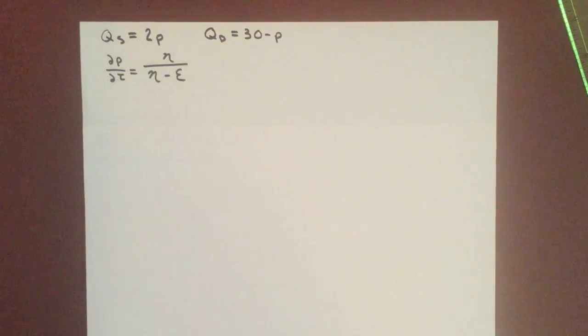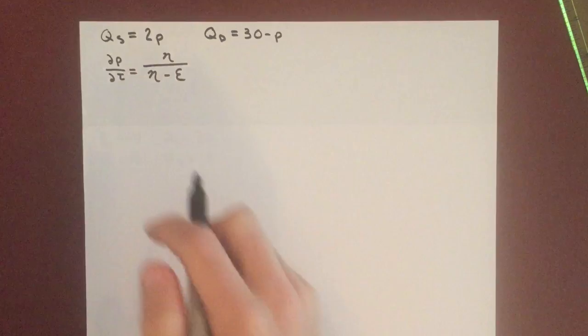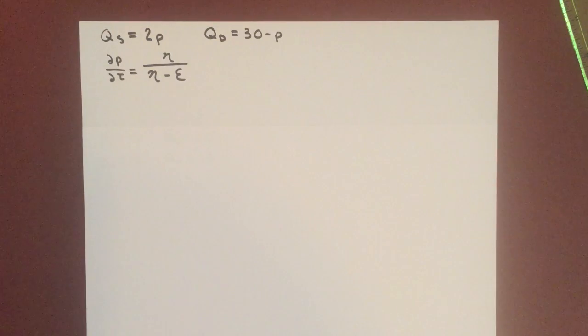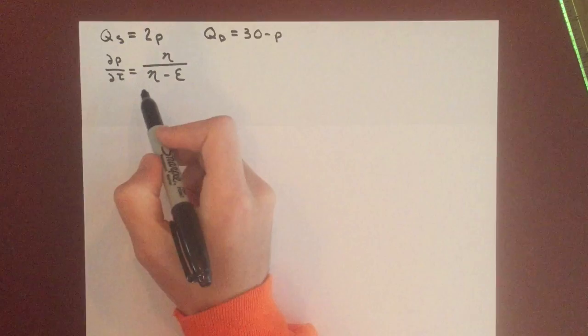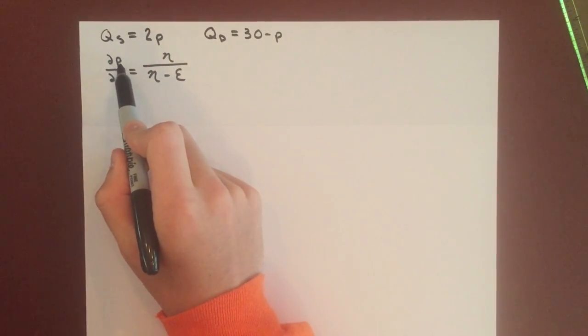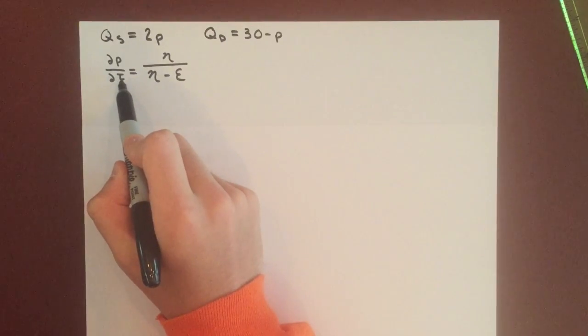In this example, we're going to look at how a sales tax would affect consumers and producers. The way you measure the effect on consumers of a sales tax, which is referred to as tax incidence, is by this equation: change in price over change in tax.